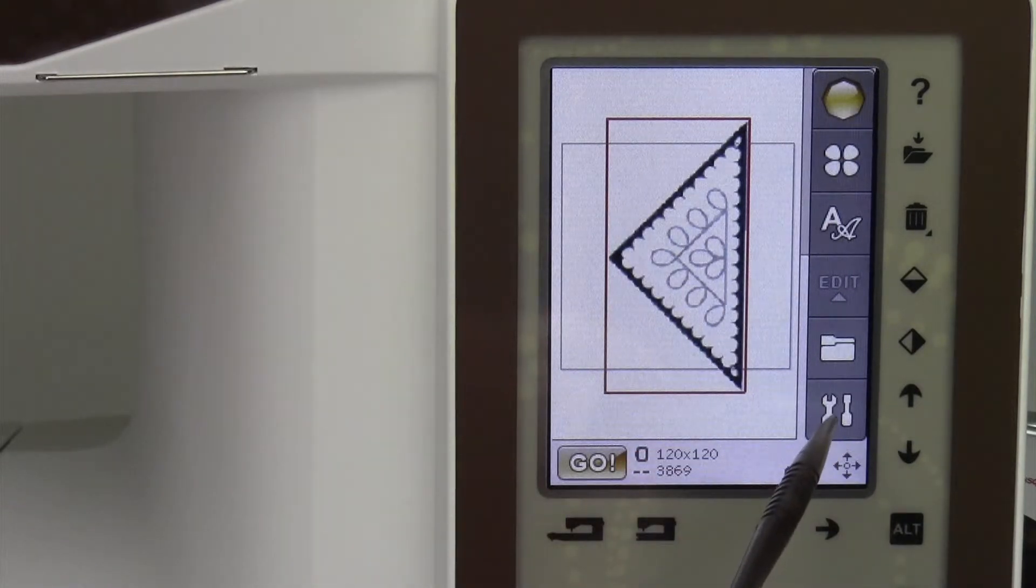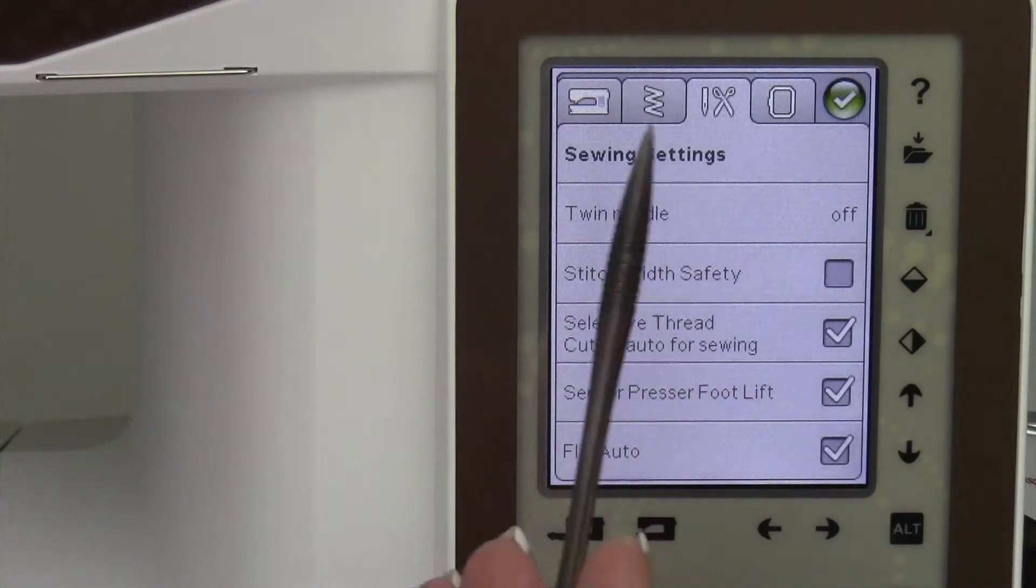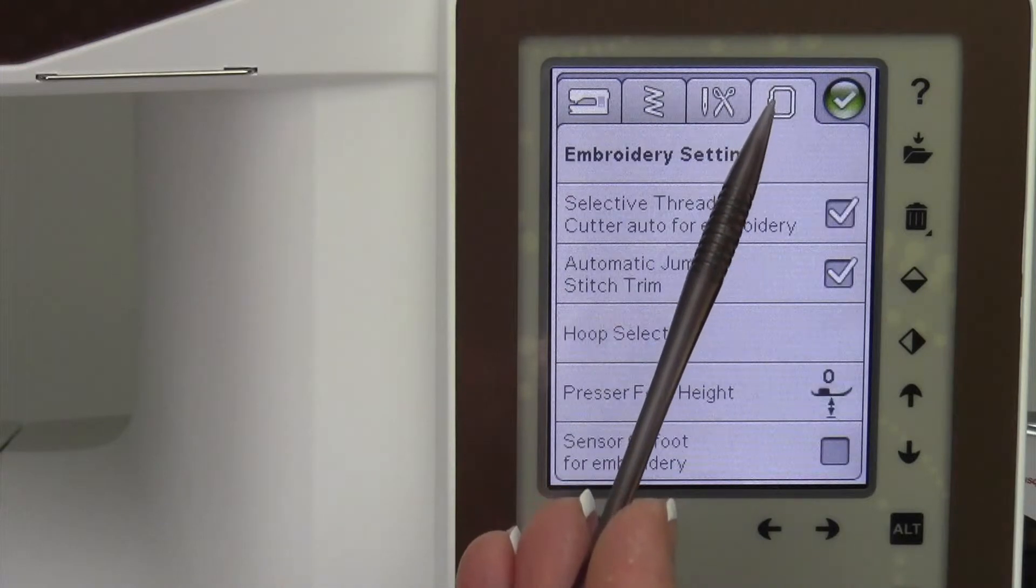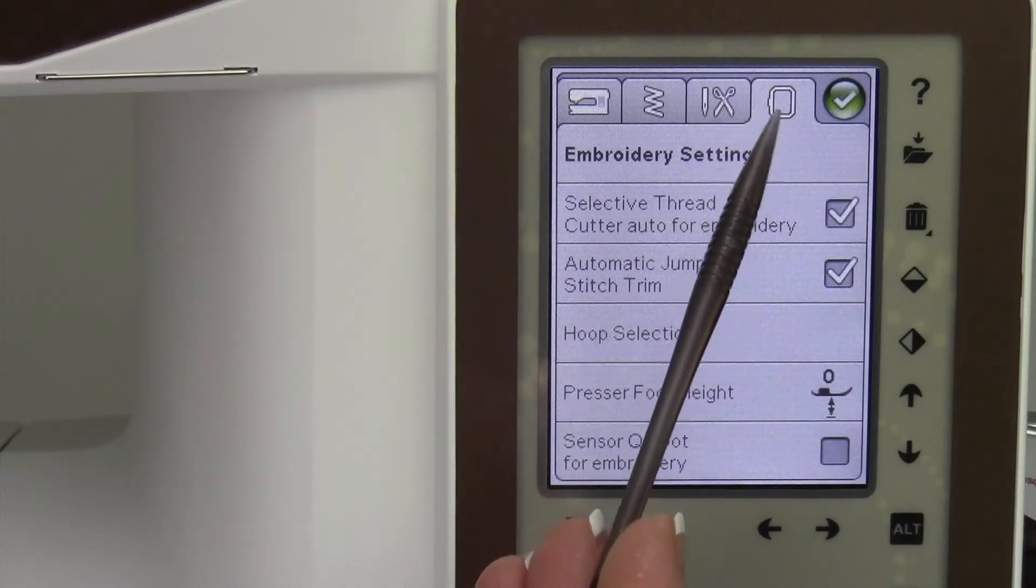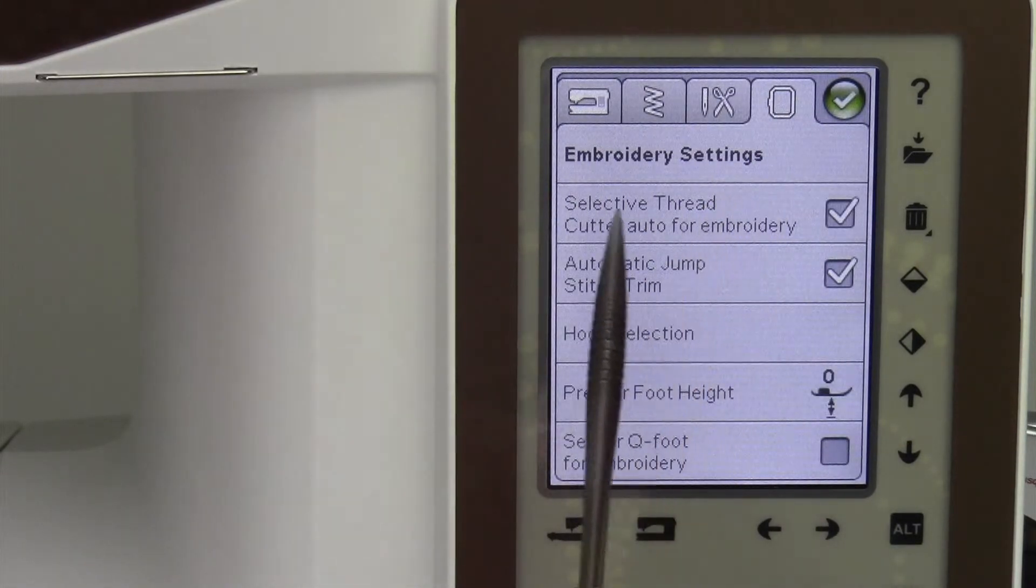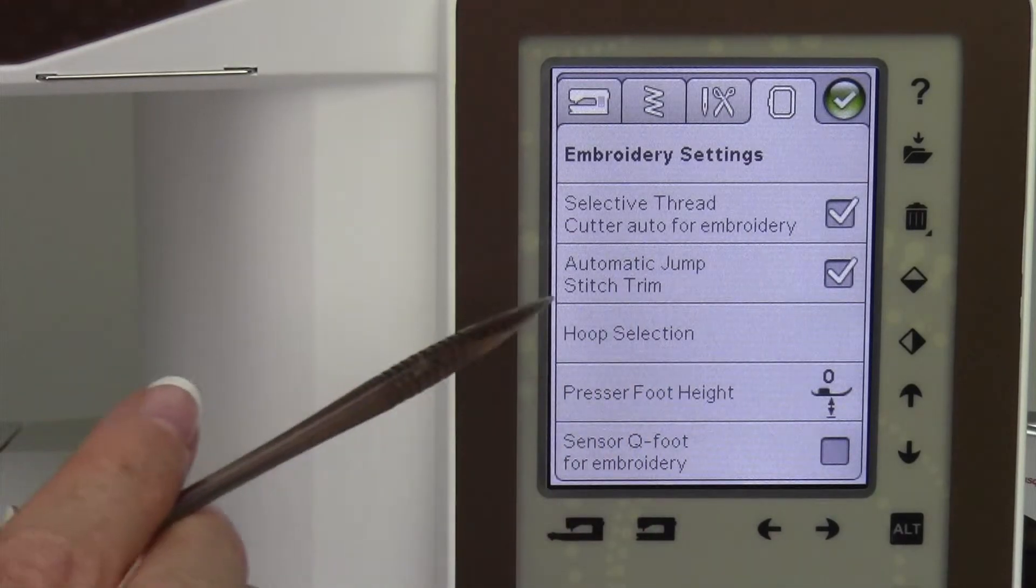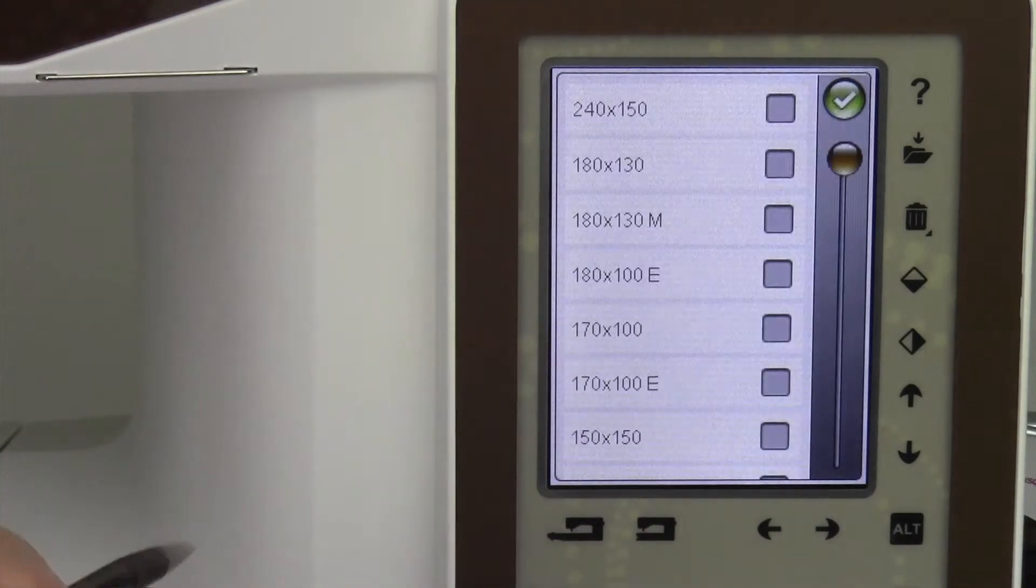Touch the start menu and come down to set. The set has an area and the tab at the top is for the hoops. Really the hoop is the embroidery settings. We'll come in here for some other things, but the one we're looking at right now is for hoop selection.